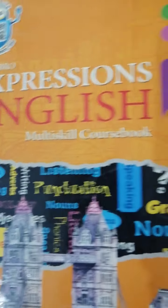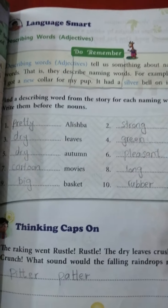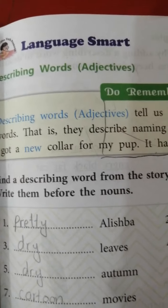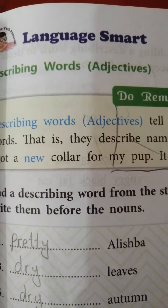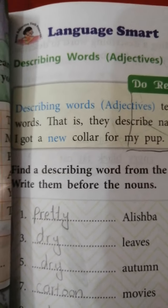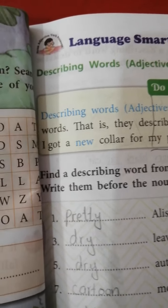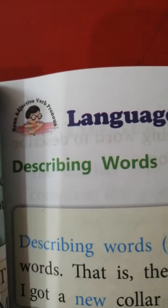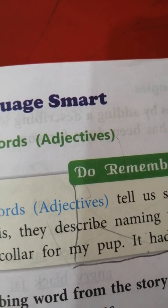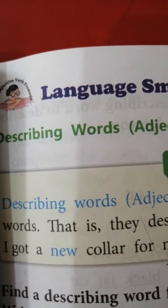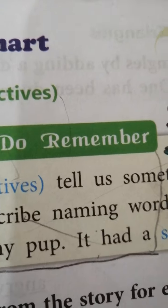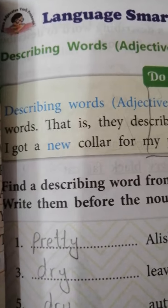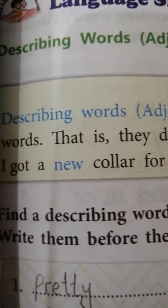Assalamu alaikum, this is English class 2 and today we are going to do our exercise from Language Smart, page number 23. These are describing words, also called adjectives. Describing words tell us something about naming words.